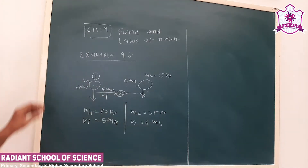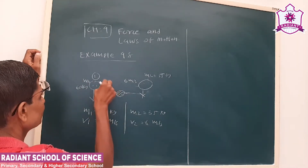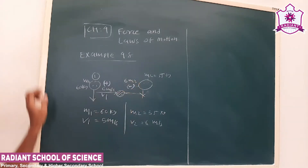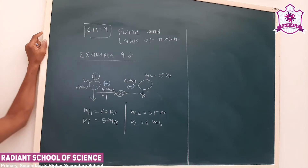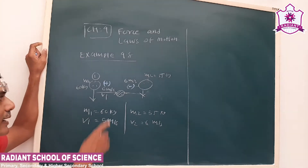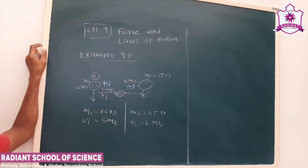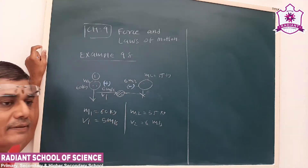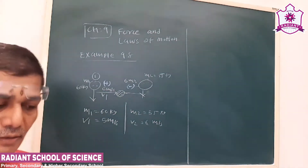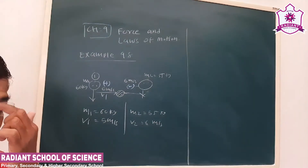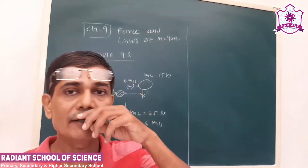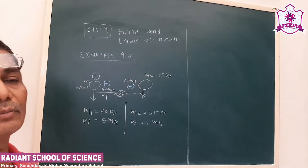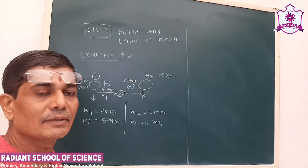As a convention, the velocity in one direction is taken as positive and the velocity in the opposite direction is taken as negative. To find out the final velocity, we use the law of conservation of linear momentum, which states that the initial momentum of the system and the final momentum of the system remain constant.